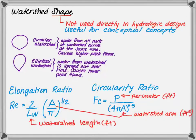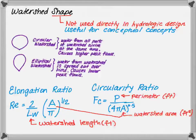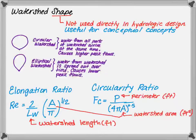The second method is the circularity ratio. The circularity ratio, Fc, is equal to the watershed perimeter divided by the quantity 4 times pi times the watershed area raised to the 1 half power. Again, pause the video and think about what Fc is for a circular watershed. Again, remember a perimeter of a circle is 2 pi r and the area is pi r squared.